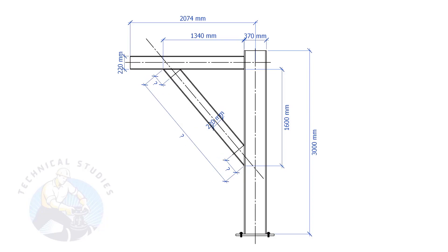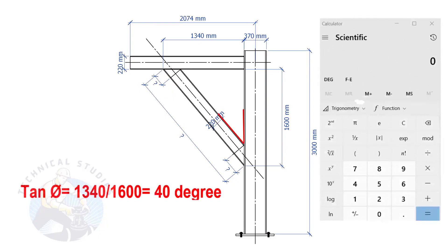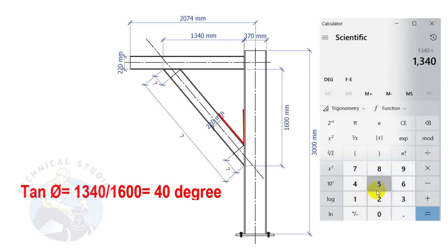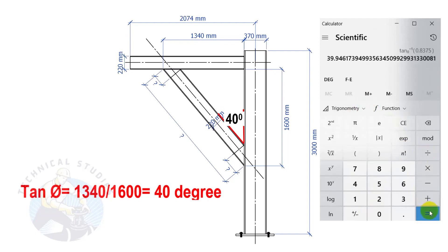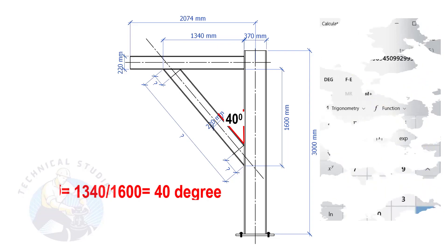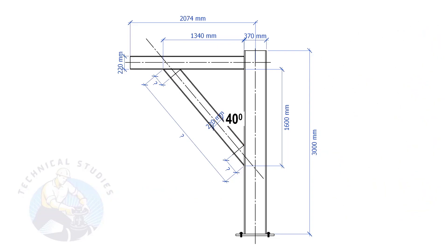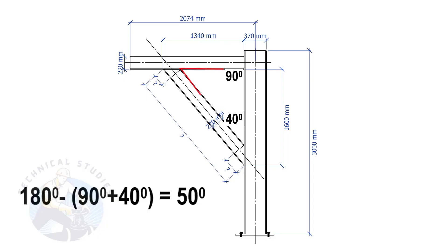Let us calculate the included angles. Tan(degree) equals 1340 divided by 1600, so the angle is 40 degrees. Since this angle is 90 degrees, the other angle is 180 minus 90 minus 40, which equals 50 degrees.